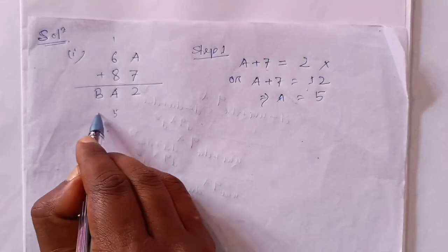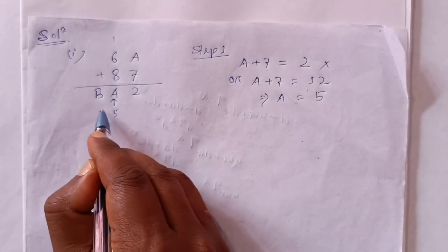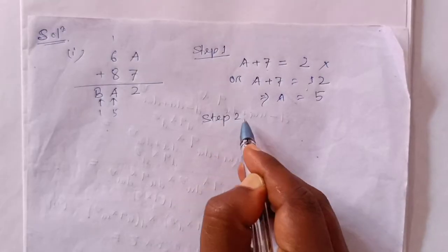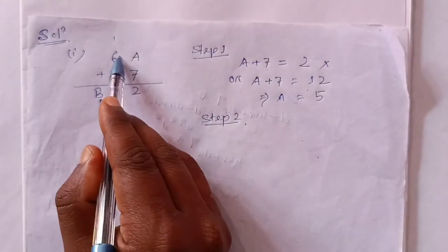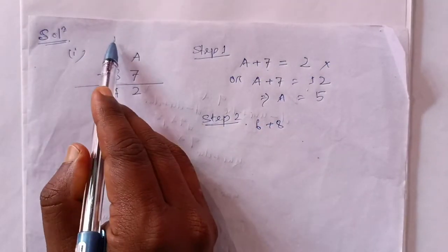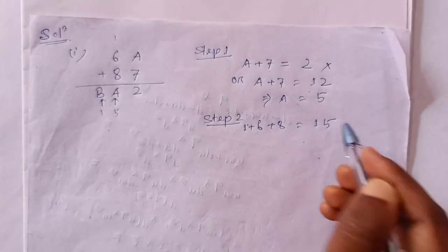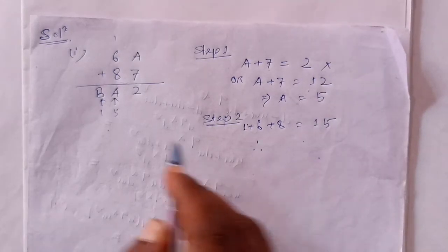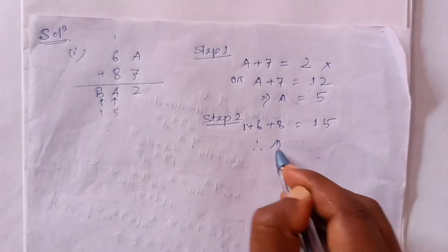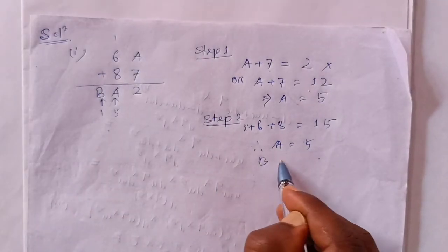This is 5 and this is 8. This means 5 and this means 5. This means 5 and this is 1. Step 2 is 6 plus 8. This means 1 plus 6 plus 8 is equal to 15. If 15 is equal to A5, then B is equal to 1.